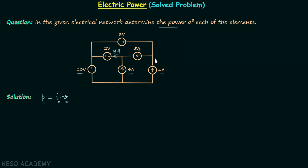Following KCL, 6 amperes flows in one branch. This 6 amperes splits: 5 amperes flows in one sub-branch, so the remaining 1 ampere flows in the other branch. Since there is no further division, the same 1 ampere continues. Then 1 ampere and 9 amperes both enter the next node, giving a current of 10 amperes in that branch.